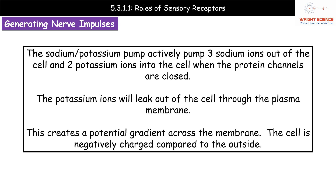The sodium-potassium pump uses ATP — because it's an active process — to pump three sodium ions out of the cell, then returns two potassium ions into the cell. So we get an exchange: three sodium go out, two potassium come in. Those potassium ions that have moved in then leak back out of the cell through the plasma membrane itself.